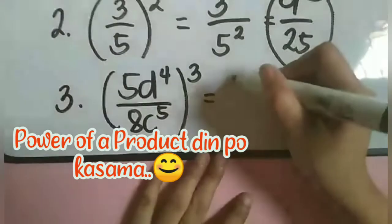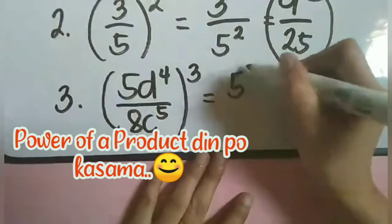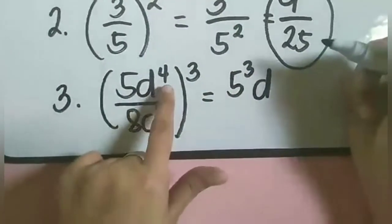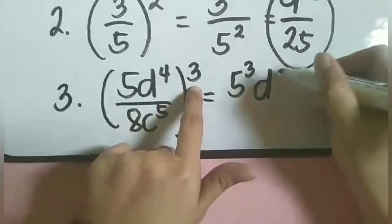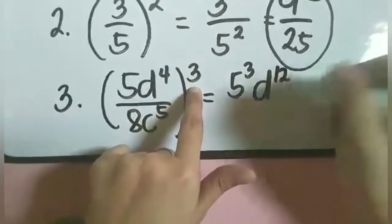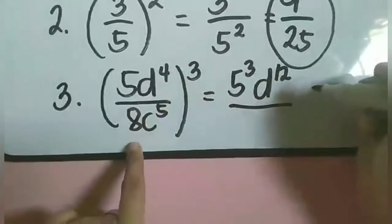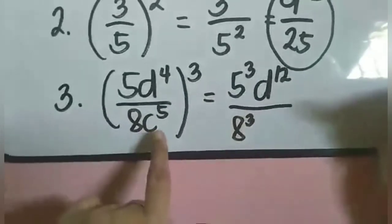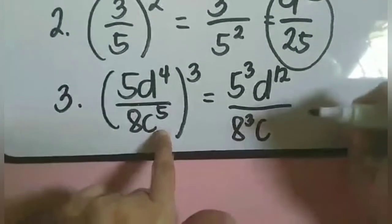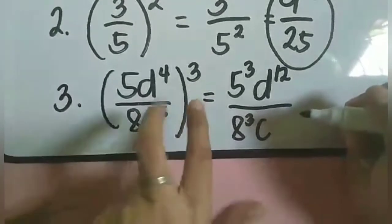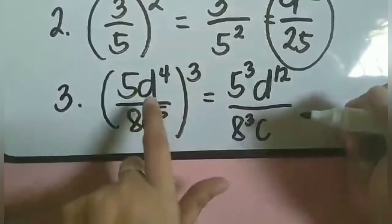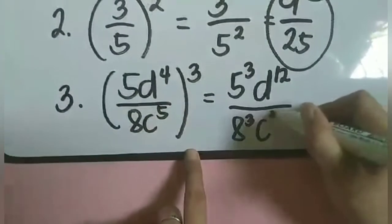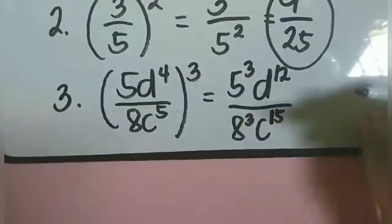So: 5 raised to 3, then d — the exponent becomes 4 times 3, which is 12. Over: 8 raised to 3, then c — the exponent becomes 5 times 3, which is 15. Times lang yung exponent kapag variable — that's the Power of Power rule.